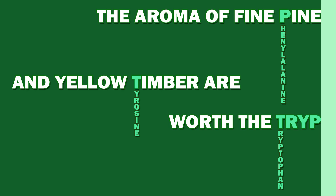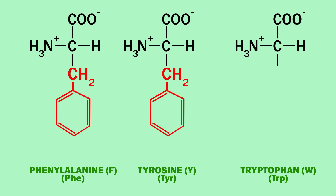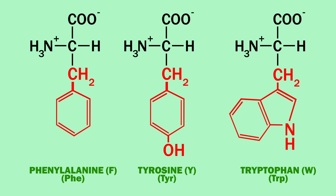Phenylalanine has a benzyl group attached to it. Tyrosine is almost identical, but has a hydroxyl group. Tryptophan has two aromatic rings — one a five-membered ring with a nitrogen, and one a six-membered ring. The rings sort of look like a W if you think about it.